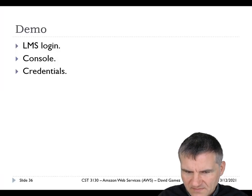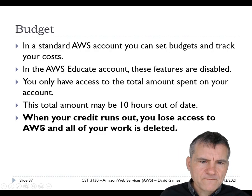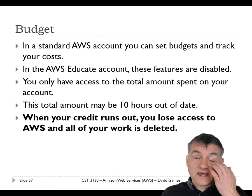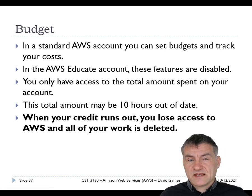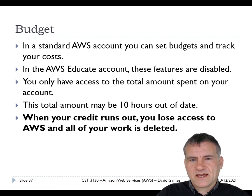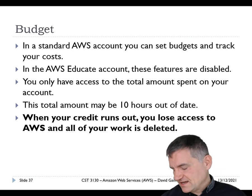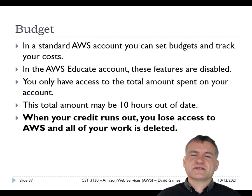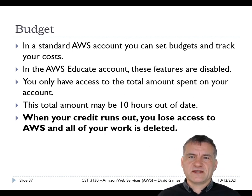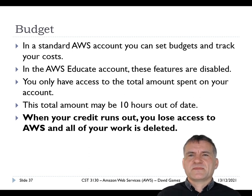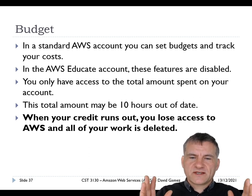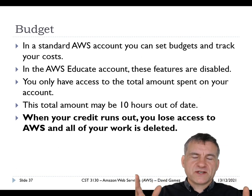The budget is an important consideration. In a normal AWS account you can set budgets per service — for example, limiting Lambda function spend — and configure alerts or even block services if you exceed a threshold. This is quite straightforward once you learn how.